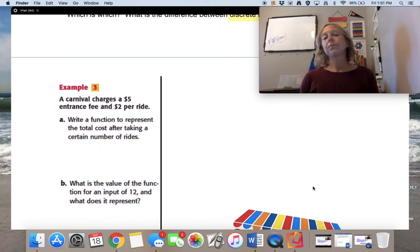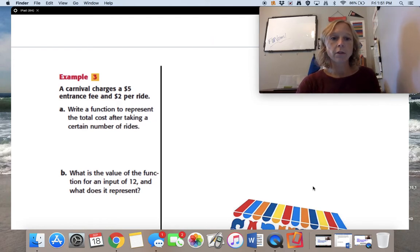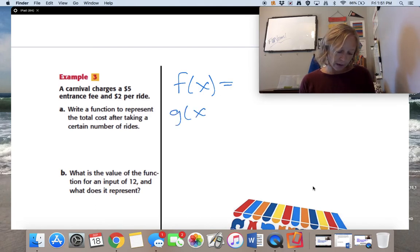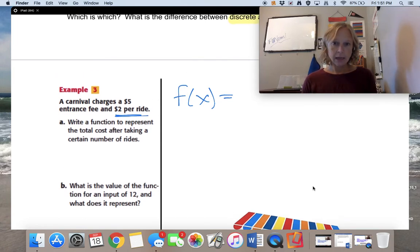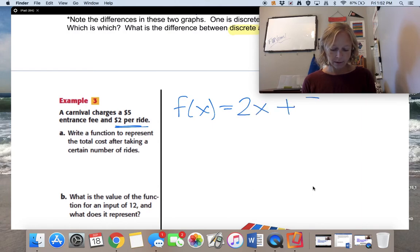One more example, and then we'll wrap things up. This is a word problem. We have a situation where it says a carnival charges a $5 entrance fee and $2 per ride. Write a function to represent the total cost after taking a certain number of rides. Well, whenever I hear those words, write a function, I start writing f of x equals because all of my functions start with f of x. Now, it could start with g of x. Since this is a carnival, it could be c of x. It doesn't matter what this letter in front is. It can be anything you want, but we usually see f of x and g of x. Those are the two most popular ones. So the total cost after taking a certain number of rides. So it's $5 entrance fee and $2 per ride. So I know from my Algebra 1 skills that when I see that per ride, that is repeating and that is my multiplier. So $2 per ride plus $5 to get in.